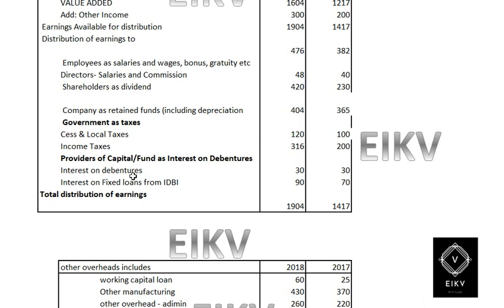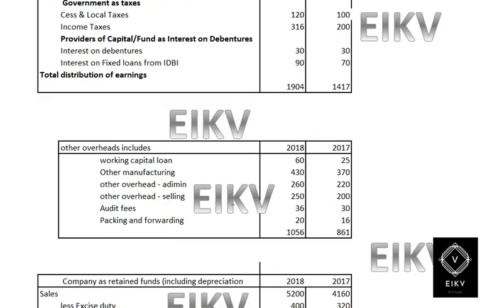For the provision of capital fund — that is, interest paid — this question has three categories of interest: working capital loan, debentures, and long-term loans. In the distribution statement, we include interest on debentures and long-term fixed loans, as these are long-term. The working capital loan interest is adjusted in the cost of bought-out under other overheads. The sum total of all earnings distributed gives 1904 and 1417.